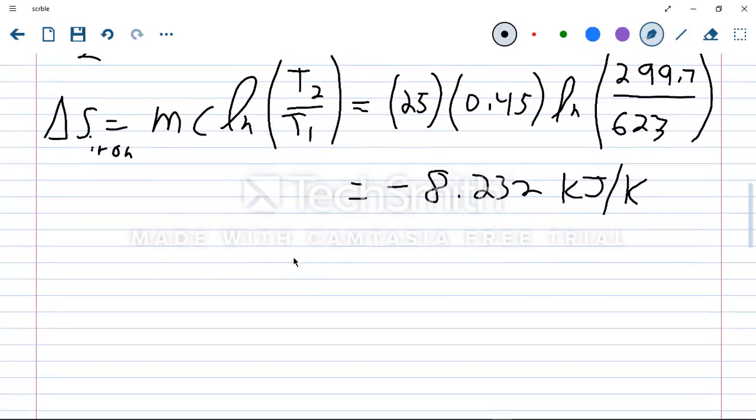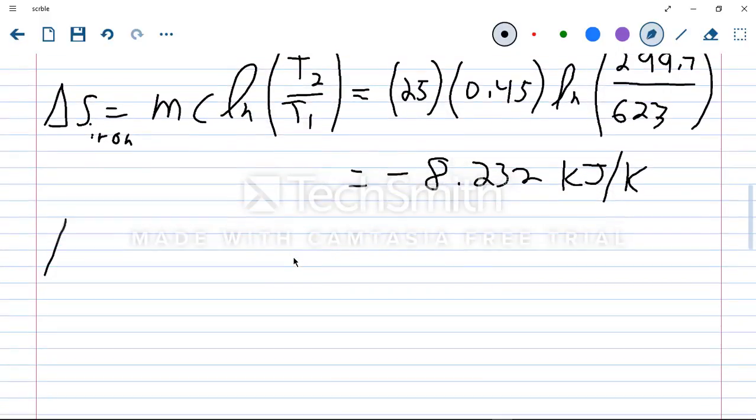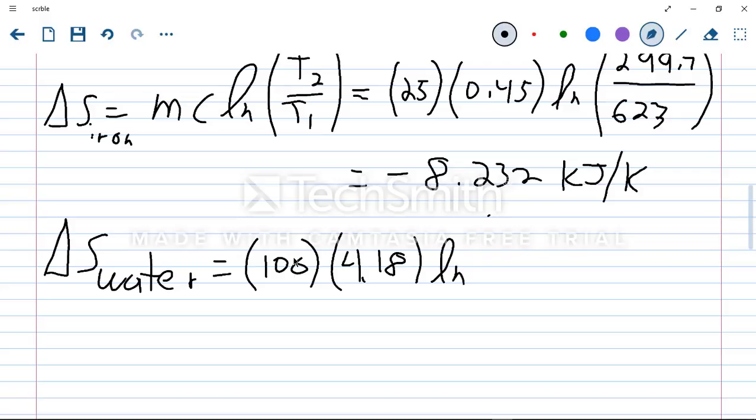We do the same thing for the change in entropy for the water using the same formula. That's going to bring us to 100 kilograms times 4.18, specific heat, times the natural log of the temperature ratio. So they both end at the same final temperature of 299.7. And the water starts at 291 Kelvin. Our change in entropy for the water is going to be a positive 12.314 kilojoules per Kelvin.